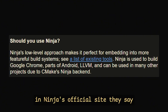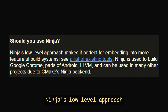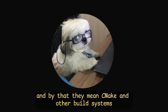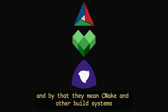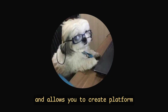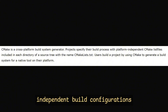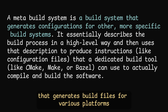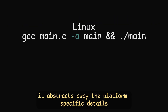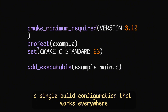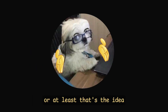In Ninja's official site, they say: 'Ninja's low-level approach makes it perfect for embedding into more featureful build systems' — and by that they mean CMake and other build systems. CMake is a lot higher level and allows you to create platform-independent build configurations. CMake acts as a meta build system that generates build files for various platforms. It abstracts away the platform-specific details, allowing developers to write a single build configuration that works everywhere — or at least that's the idea.